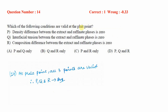This question asks which conditions are valid at the plait point. The plait point is where the extract phase and raffinate phase intersect — at this point they become coincident and no separation is possible. The conditions are: density difference between extract and raffinate phases is zero, interfacial tension becomes zero, and composition difference becomes zero. All three are valid at the plait point.